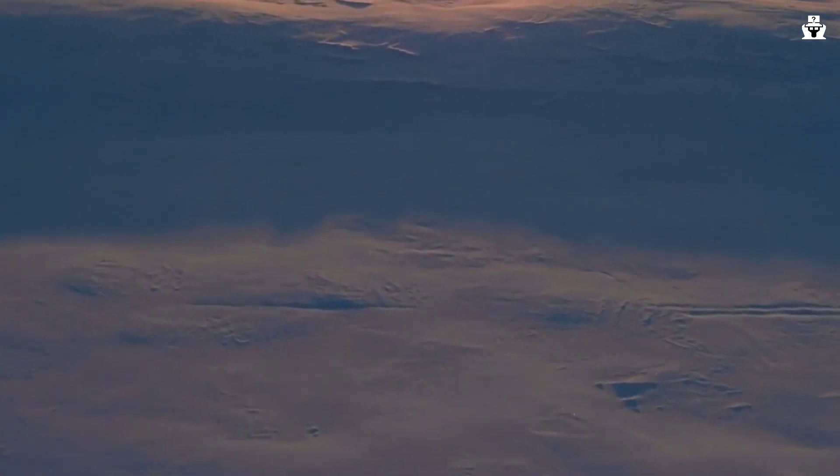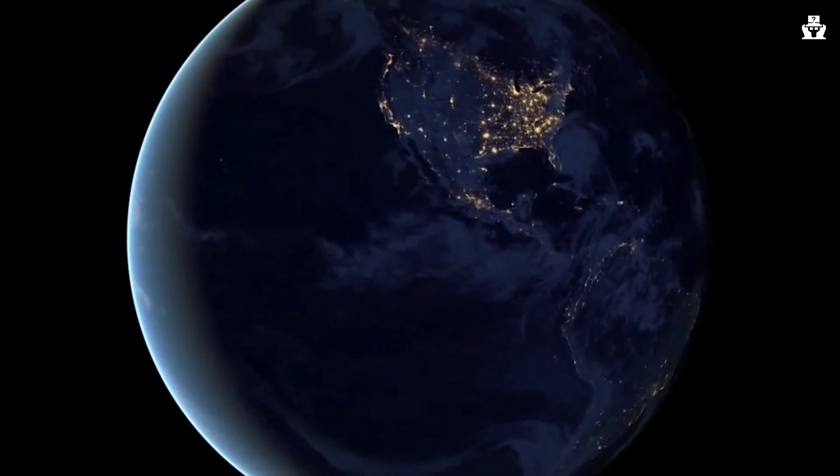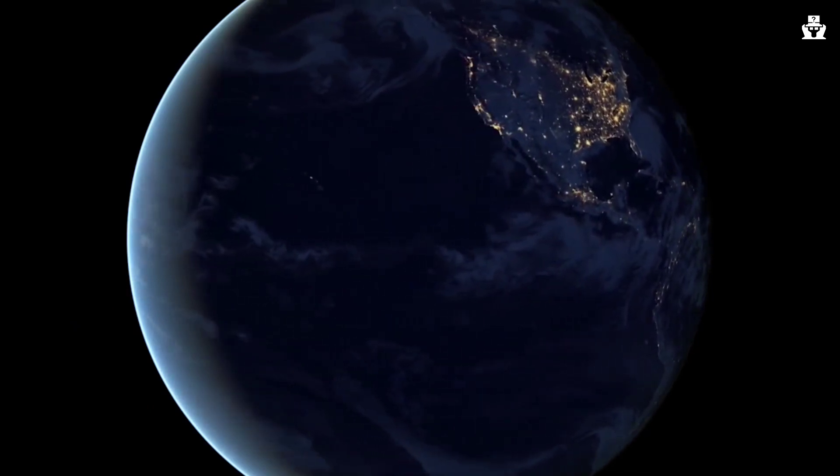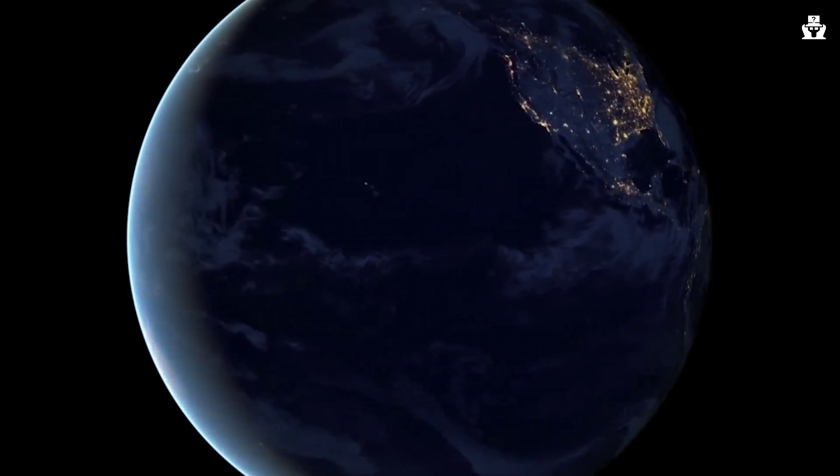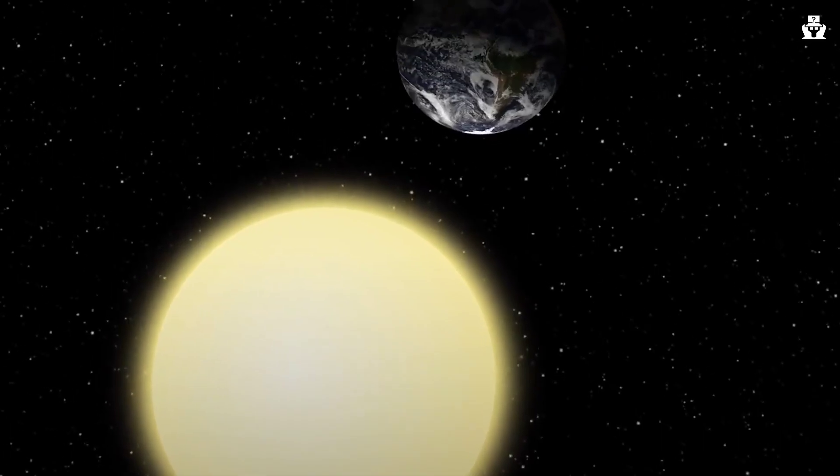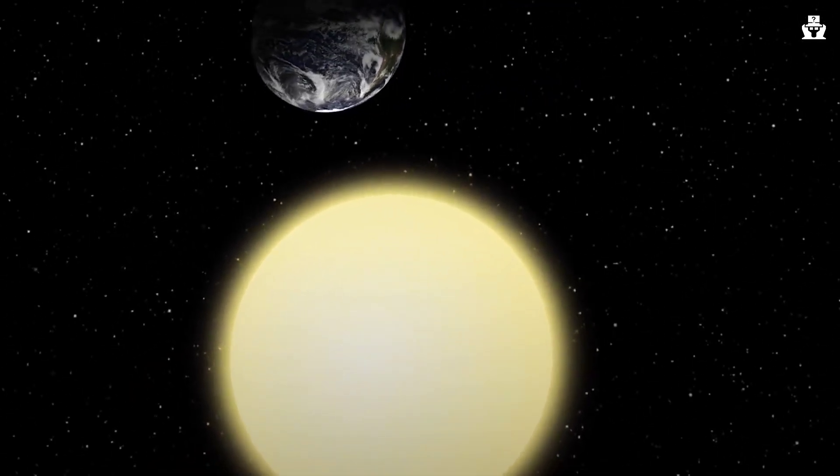To understand what would happen if the earth stopped rotating, we first need to understand how our planet's rotation works. The earth rotates on its axis, which is an imaginary line that runs through its center from the north pole to the south pole. This rotation is what causes day and night, as different parts of the planet are exposed to the sun's light and heat at different times.